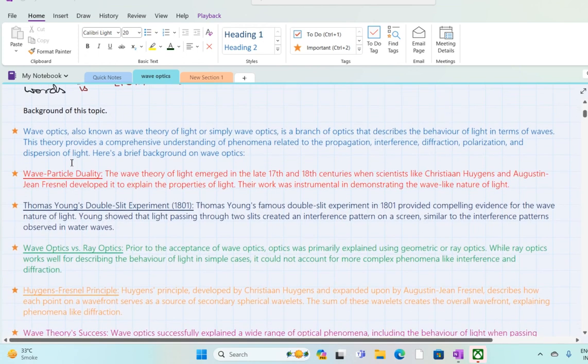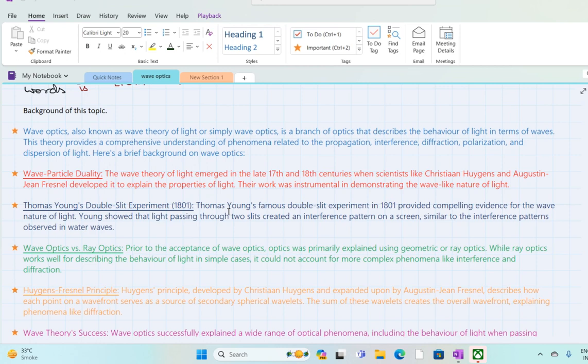This chapter is the background of this topic. The topic is Wave Optics. Wave Optics is also known as the Wave Theory of Light or simply Wave Optics. It is a branch of optics that describes the behavior of light in terms of waves. This theory provides a comprehensive understanding of phenomena related to propagation, interference, diffraction, polarization and dispersion of light.